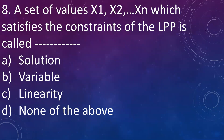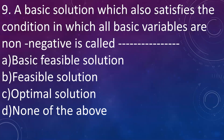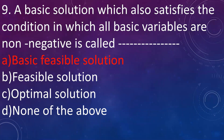Next question: a set of values X1, X2, ..., Xn which satisfies the constraints of linear programming is called: A. Solution, B. Variable, C. Linearity, D. None of the above. Answer is solution — the set of values which satisfy the constraint is the solution. Next: a basic solution which also satisfies the condition that all basic variables are non-negative is called a basic feasible solution. When the basic variables are non-negative and all constraints are satisfied, it is called a basic feasible solution.